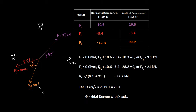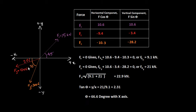We have three forces acting on the xy plane. Force F1 acts at 45 degrees with the x-axis with a magnitude of 15 kN. F2 acts at 200 degrees (or minus 20 degrees) to the x-axis with a magnitude of 10 kN, and F3 has a magnitude of 30 kN acting at minus 70 degrees with the x-axis. You can either use the full angle from the x-axis — 200 degrees for F2 and 250 degrees for F3 — or use the reference angle with appropriate signs, which we'll see shortly.